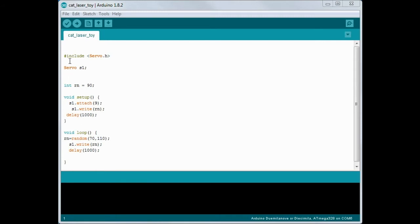Now of course, since we're using a servo, we're including the servo library. Then we're defining our servo and I'm just calling it S1 for servo 1. Then I'm setting up an integer and I'm calling it RN, that's just short for random number. And to start with I'm putting it at 90, which will start the servo out right in the middle.